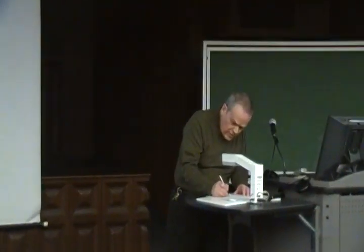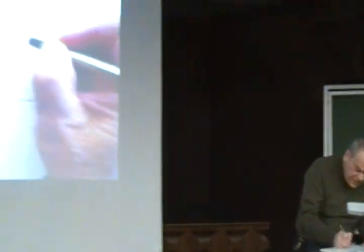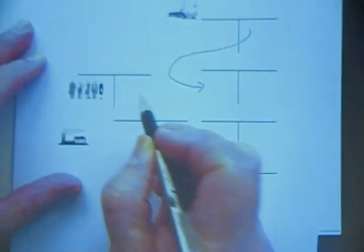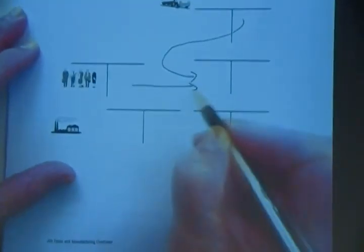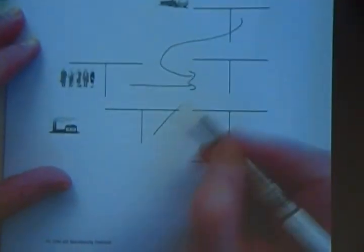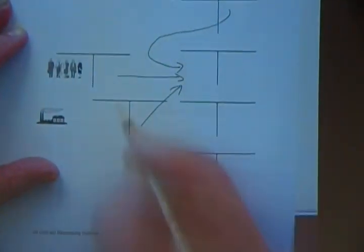Indirect went from here to here, then factory labor went from here to here, then manufacturing overhead went from here to here.